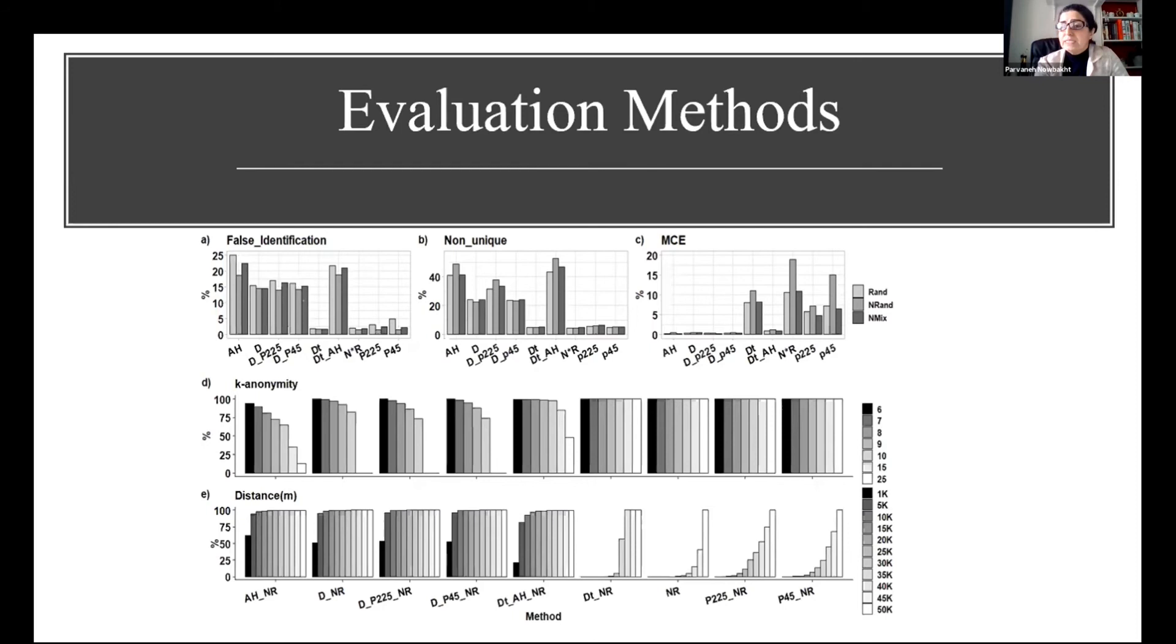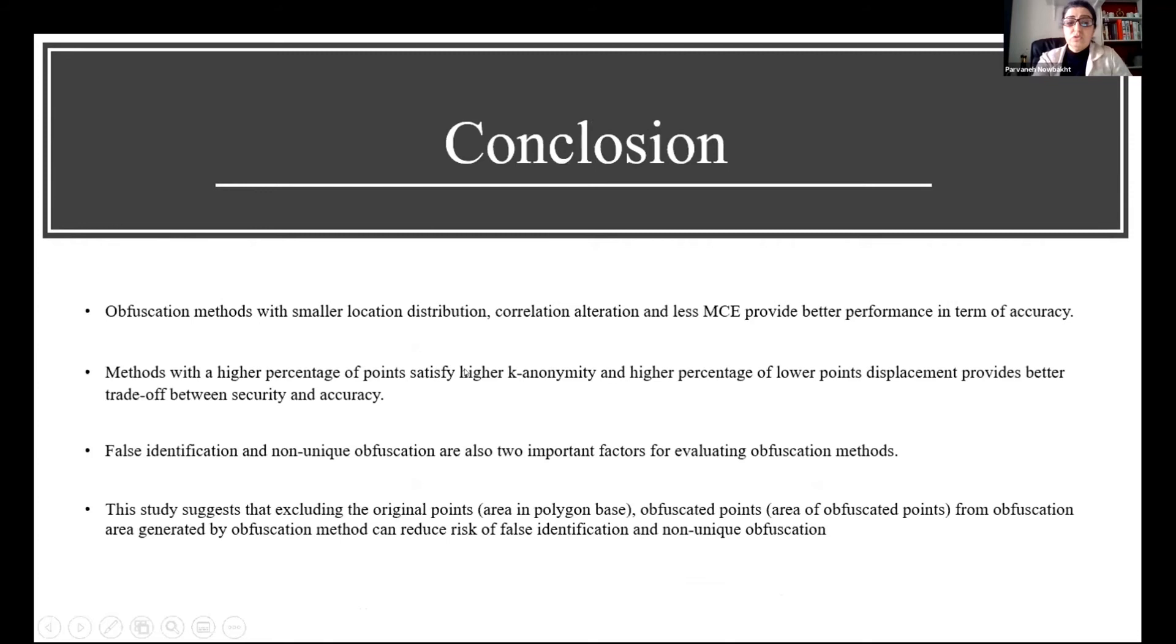It means two or more points have the same obfuscated point, or the obfuscated point is inside the obfuscated area of another polygon. If we consider these two metrics, we can see donut help has the most, so it is the drawback of this method.